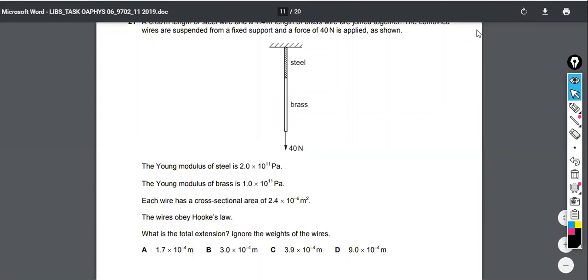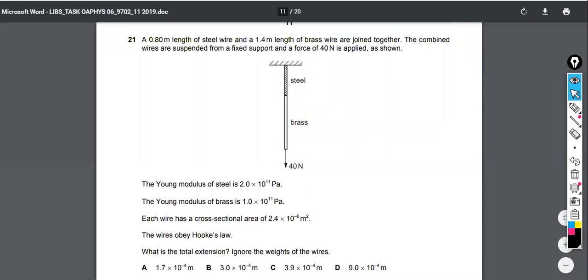All right, so here's another question, question 21 from the 2019 paper, and it's kind of hard to read right now. It says, a 0.80 meter length of steel wire and a 1.4 meter length of brass wire are joined together. The combined wires are suspended from a fixed support, and a force of 40 newtons is applied, as shown.